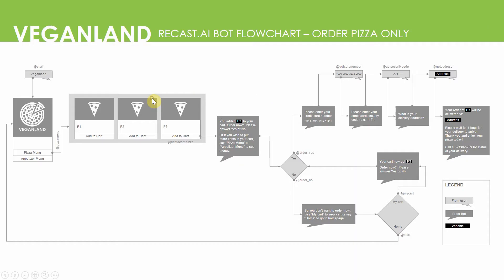Here is a flowchart I made for VeganLand, for ordering pizza only. Users start with the keyword 'VeganLand' or 'home.' The chatbot replies with a card having either a pizza menu button or an appetizer menu button. If you click on the pizza menu button, the chatbot responds with a carousel filled with pizza items you can add to cart. Suppose you want to add pizza item P3 — once you click 'add to cart,' it replies telling you what you have added. It asks you to order now with yes or no, or you can type 'pizza menu' or 'appetizer menu' to add more items. If you say no, it kindly tells you to say 'my cart' to view your cart or say 'home' to go to the home page.